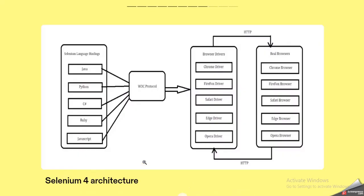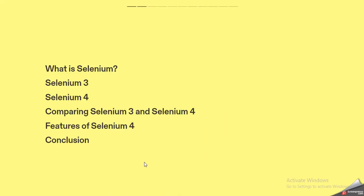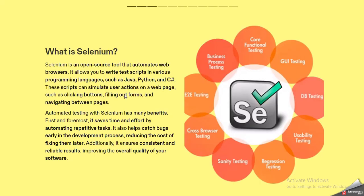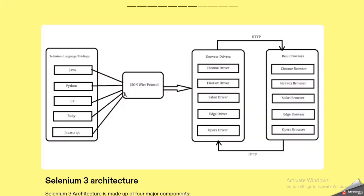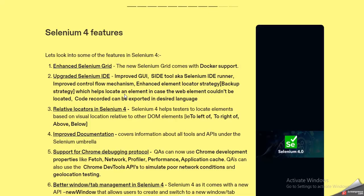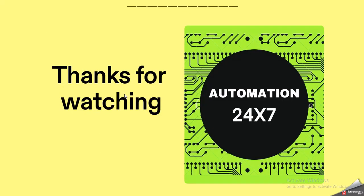I hope all these slides were helpful. Whenever any question is asked regarding Selenium, the drawbacks of Selenium 3, the features of Selenium 4, or the comparison between Selenium 3 and Selenium 4, all of this can be answered from these slides. I will be sharing the link to this slide, and wherever any modification happens in Selenium I will update the presentation. Hopefully it helped you — thanks for watching and keep subscribing to Automation 24/7.